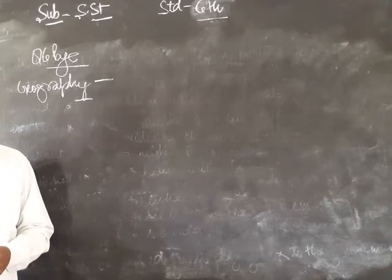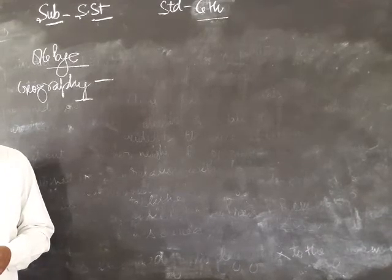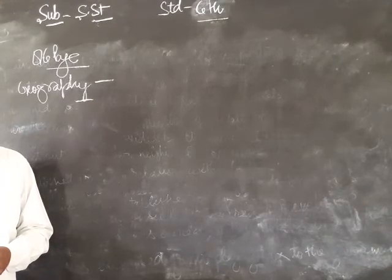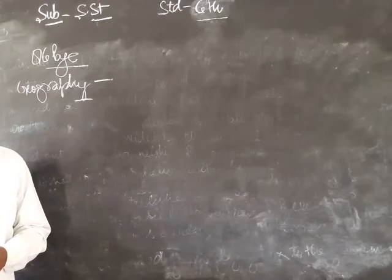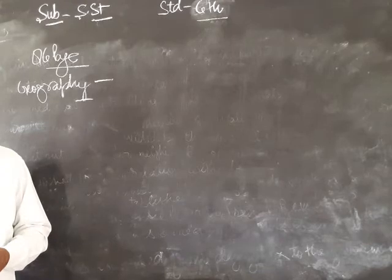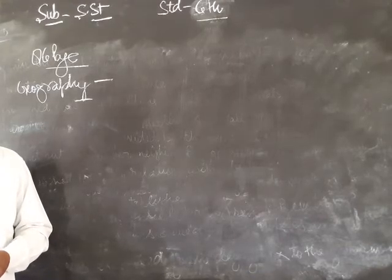In decreasing order of size: Jupiter, Saturn, Uranus, Neptune, Earth, Venus, Mars and Mercury. Venus is the brightest object in the sky.